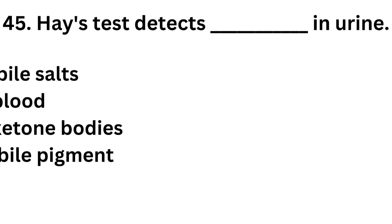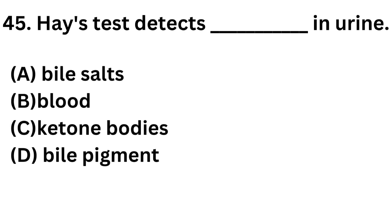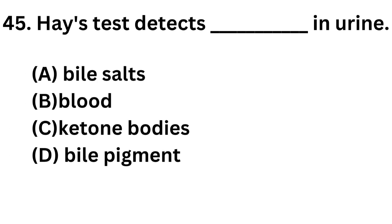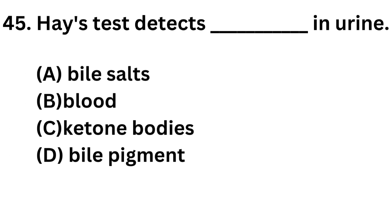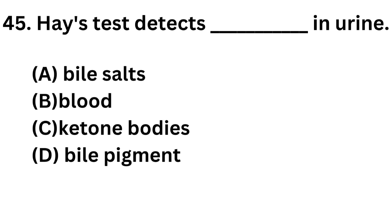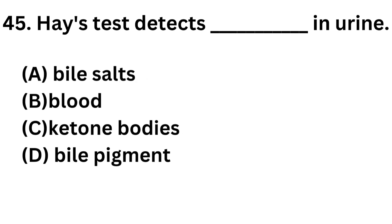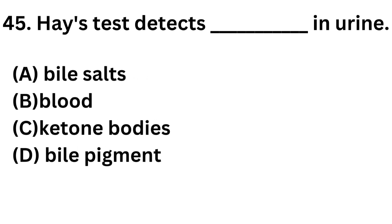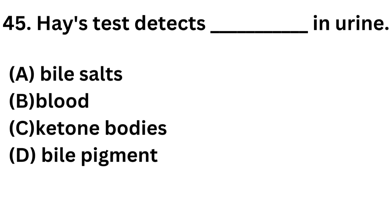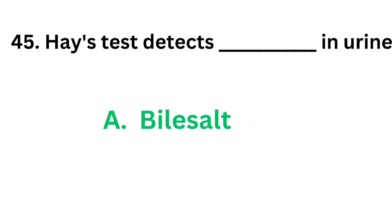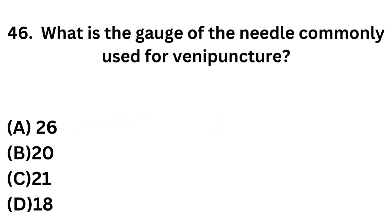Question number 45: Haze test detects dash in urine. Option A: Bile salts. Option B: Blood. Option C: Ketone bodies. Option D: Bile pigment. The correct answer is option A, bile salts. Haze test detects bile salts in urine. Sodium glycocholate and sodium taurocholate are the bile salts.